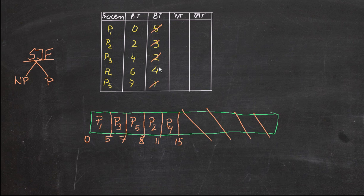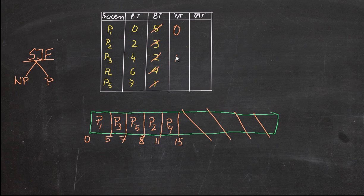Now let's find out the waiting time. Waiting time is always the visiting time minus the arrival time. For P1: visiting time is 0, arrival time is 0, so waiting time is 0. For P3: visiting time is 5, arrival time is 4, so 5 minus 4 is 1. For P5: visiting time is 7, arrival time is 7, so 7 minus 7 is 0 — P5 did not have to wait at all. For P2: visiting time is 8, arrival time is 2, so 8 minus 2 is 6. For P4: visiting time is 11, arrival time is 6, so 11 minus 6 is 5.